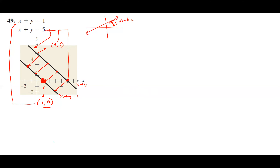So x plus y equals five is the top graph. I'm going to pick a point along one of the parallel lines — doesn't matter which one. This will be my x-one, y-one. I'm going to make the other equation into a line, but I need to set it equal to zero. So I subtract five from both sides. The coefficients in front of x is my a value, in front of y is my b value, and the constant is my c value.